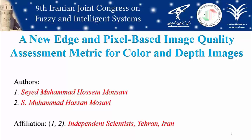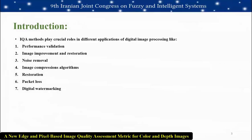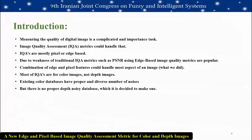This paper presents a new edge and pixel based image quality assessment metric for color and depth images. Image quality is a characteristic that assesses the amount of degradation and distortion, including blurriness, color shift, and all types of noises, using an image quality assessment metric or IQA. IQA helps to control and minimize distortion in received or transmitted images and plays a crucial role in digital image processing applications such as performance validation, image improvement and restoration, noise removal, image compression algorithms, packet losses, and digital watermarking.